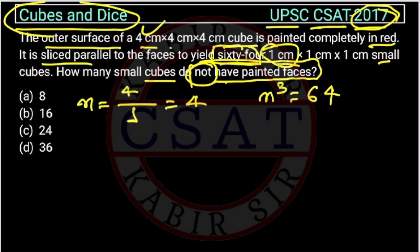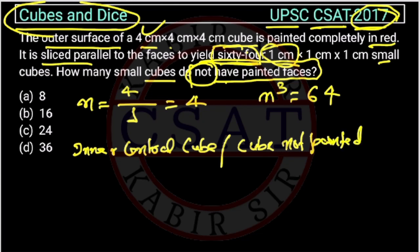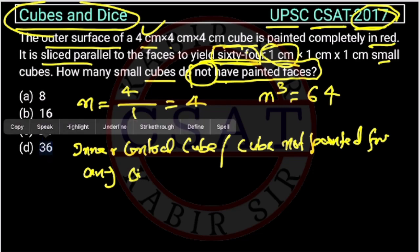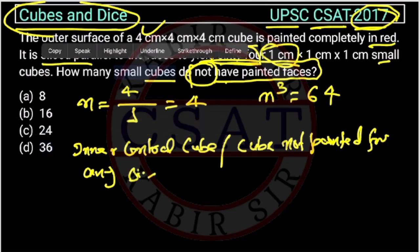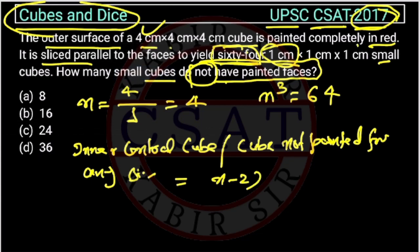Now, the formula for inner central cube, or the cubes not painted from any side, will be n minus 2 cube. n is here 4.